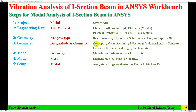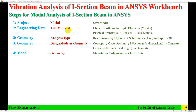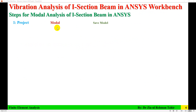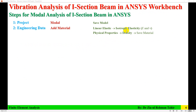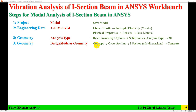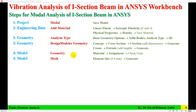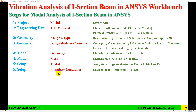The steps I followed in the previous video were: first I created a model, then I added material properties — modulus of elasticity, Poisson's ratio, and density. Then the analysis type and beam were created in the design model geometry, material was assigned, mesh with element size of 5 millimeters was performed, and 15 modes were requested in the modal analysis settings.